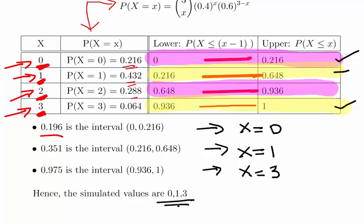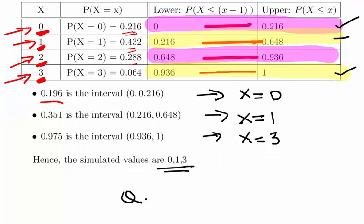Just for argument's sake, if we had another number like 0.751, that would fall into this bin here and give us x equals 2. I went to three decimal places, but you could go to four or five decimal places.